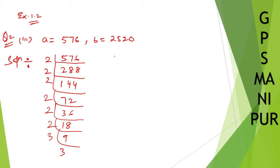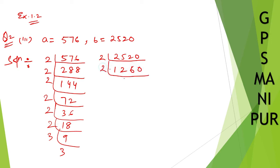Now let us also find the prime factors of 2520. 2 into 2 is 4, 2 into 4 is 8, 6 into 2 is 12. Again divide by 2 — 2 into 6 is 12, 2 into 3 is 6. Again divide by 2 — 2 into 3 is 6, 2 into 1 is 2, 2 into 5 is 10.